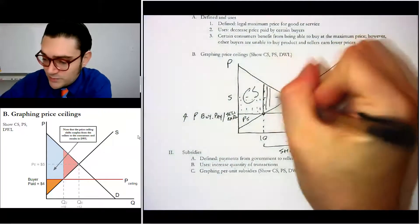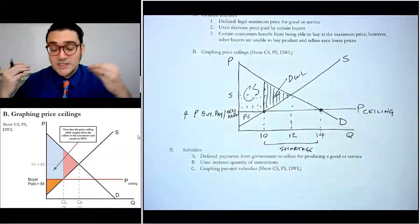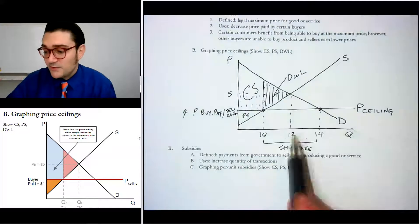Now, this area, just like we've seen in the others, is the deadweight loss. It's the value of the transactions that should have happened but didn't. We went from 12 to 10.